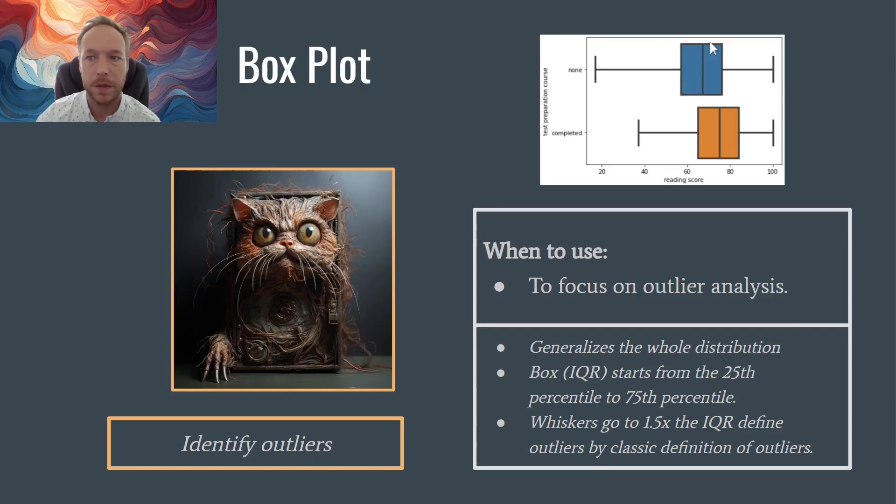You see the 25th to the 75th percentile, and this is the interquartile range. And then one and a half times outside of that would be when we classically define an outlier.